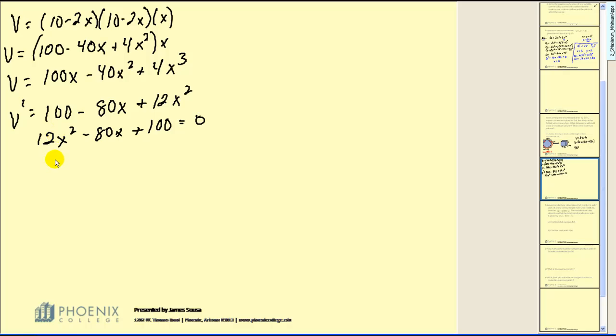If you want to pause the video and verify this, please feel free to do so. So the solutions, x equals 5 thirds and x equals 5. These are our two critical numbers.